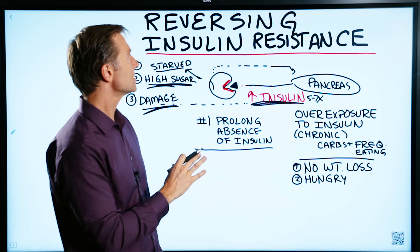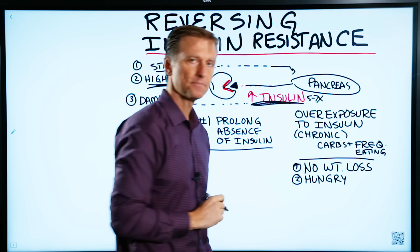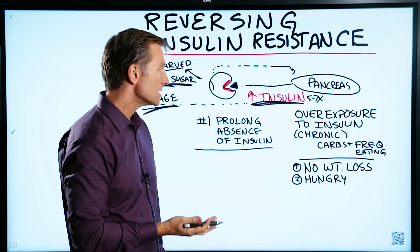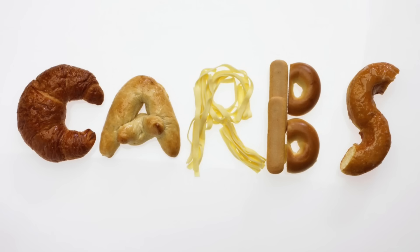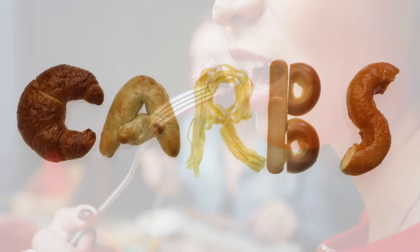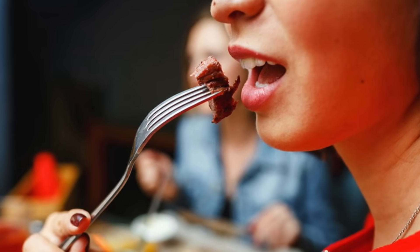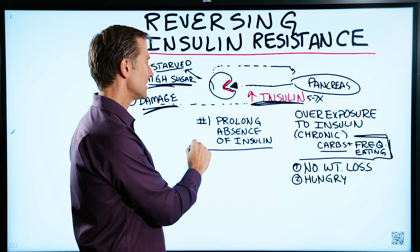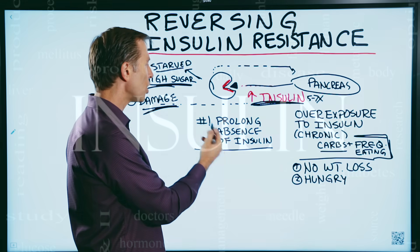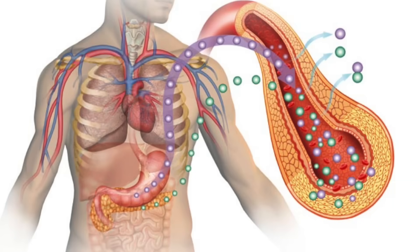So what causes insulin resistance? The overexposure of insulin. What causes that? The chronic consumption of carbs and eating too frequently — frequent meals and snacking. How do we fix this problem? You just reverse the process and do a prolonged absence of insulin — you avoid the triggering of insulin over a period of time.